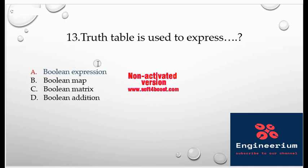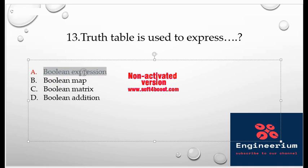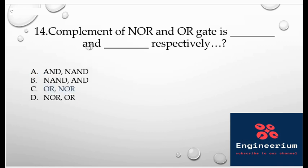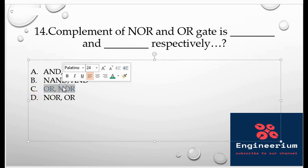The truth table is used to express... Options are given. So the right answer is the Boolean expression. Yes, a truth table is used to express the Boolean expression. And complement of NOR and OR gate, so complement is simply adding a NOR gate to a circuit, so option C is the right answer.